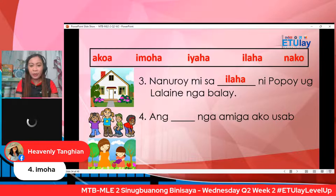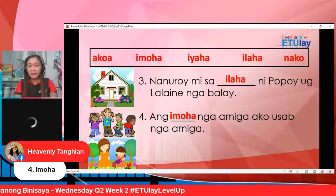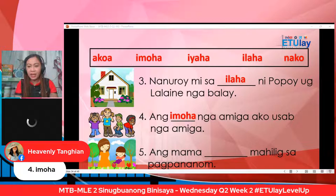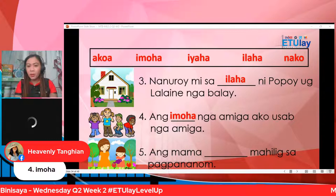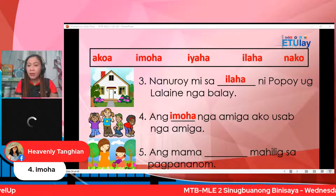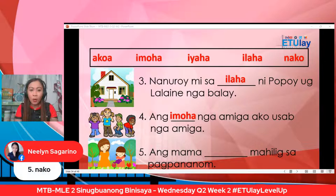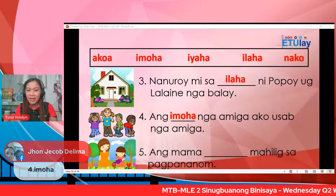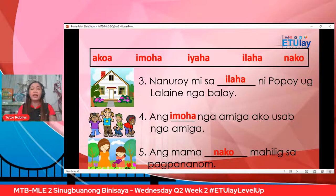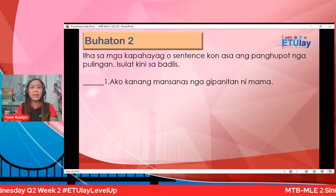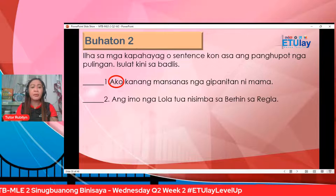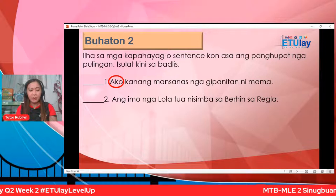Ilaha sa mga kapahayag o sentence, kunasa ang panghupot nga pulingan. Number one: ako kang mansanas nga gipanita ni mama. Sa number two, ang tubag ni Ine: ang imo nga lula, tuan ni Simba sa Birhen sa Regla. Butang din sa itong comment section ang answer sa number two. Number two na ta mga bata.